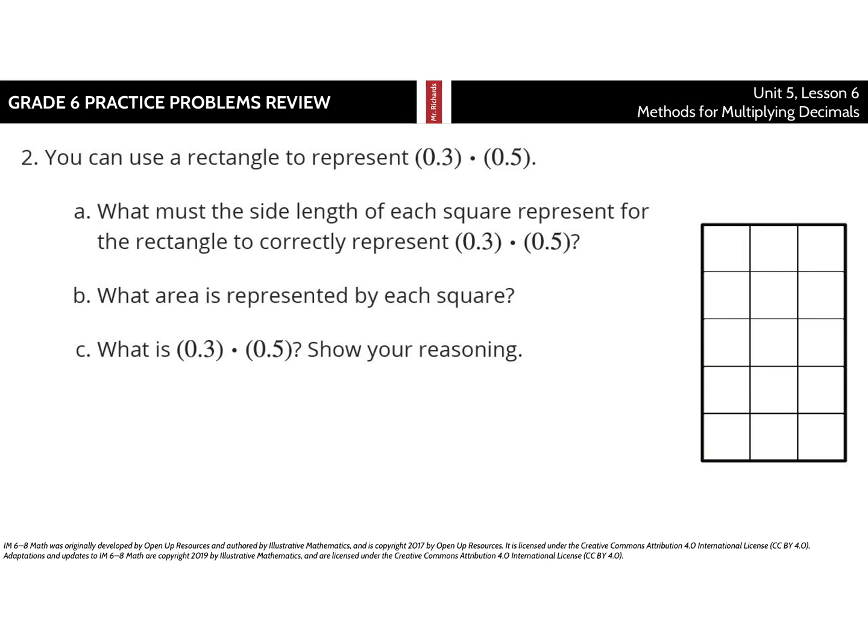In our area model question, you can use a rectangle to represent 3 tenths times 5 tenths. What must the side length of each square represent for the rectangle to correctly represent 3 tenths times 5 tenths? Well, 1, 2, 3 on this side, 1, 2, 3, 4, 5 on this side. So, each of these must be equal to a tenth going that way and a tenth coming down. So, the side length of each square represents is 1 tenth.